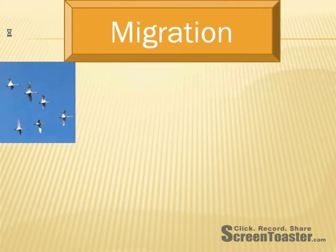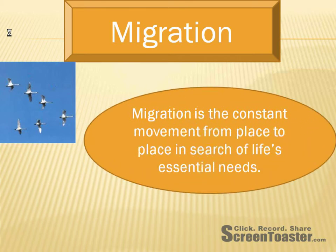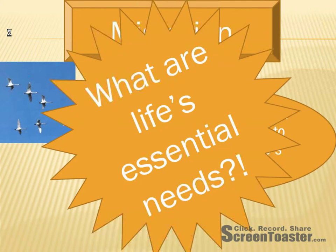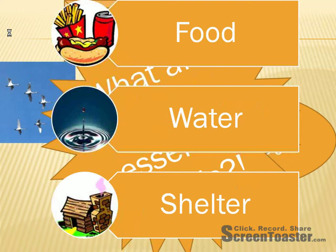Let's talk about the difference between migration and immigration. You might know about migration because several types of animals — for instance, these swans here — migrate every year. Migration is the constant movement from place to place in search of life's essential needs. There are ethnic groups, cultural groups that actually participate in migration. Those Ice Age hunters I was talking about, who eventually became the Native Americans, migrated. Those Ice Age hunters are the only group of people who have migrated into North America — everybody else immigrated. That's why I'm teaching you the difference between migration and immigration.